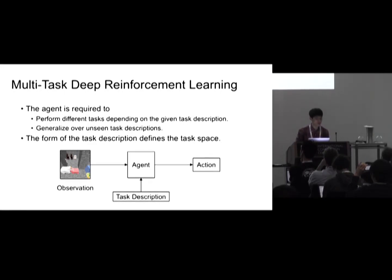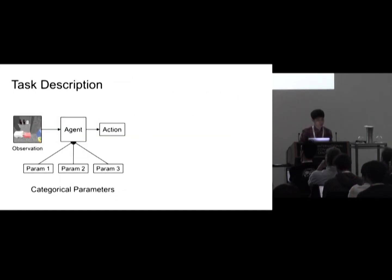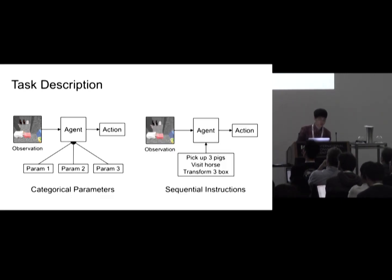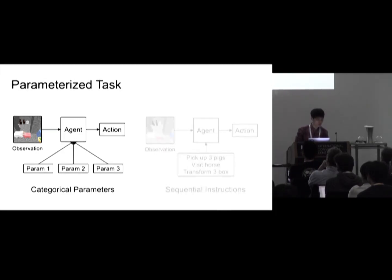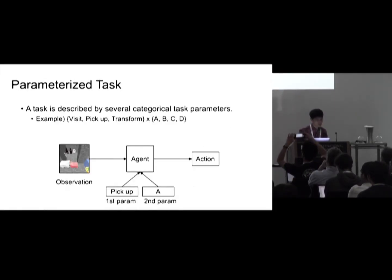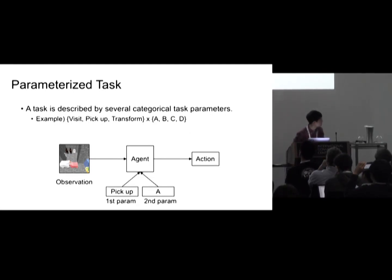The form of the task description is important because it defines the task space. In our work we consider two types of task descriptions: the first one is categorical parameters and the second one is sequential instructions. I'm going to first talk about parameterized tasks. In parameterized tasks, a task is described by several categorical parameters. For example, in this figure,